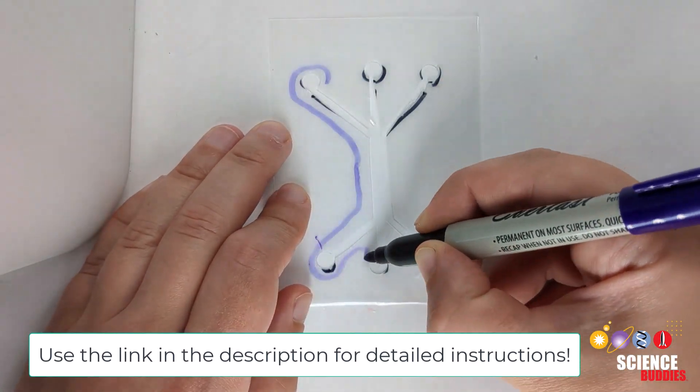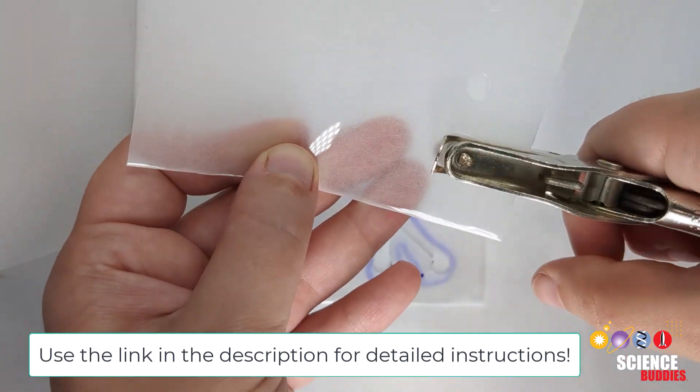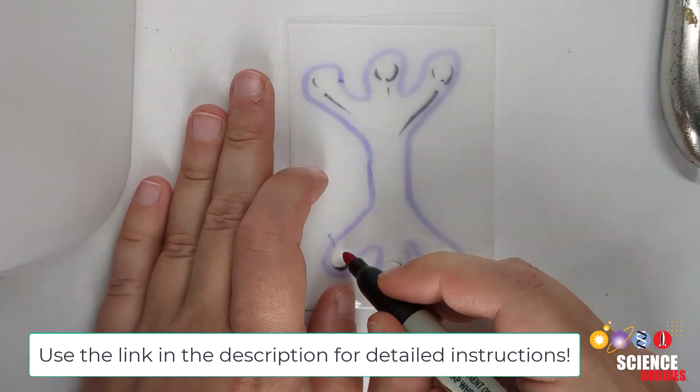Next, trace around your design to more easily align each sheet when they are layered. Then, place the top or bottom sheet onto the middle sheet to trace and punch out each input or output hole.